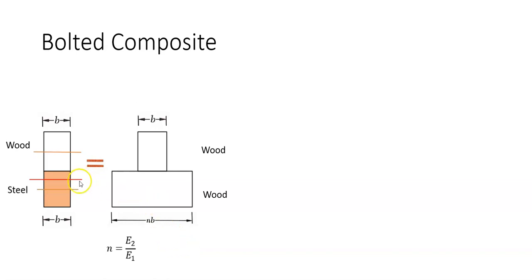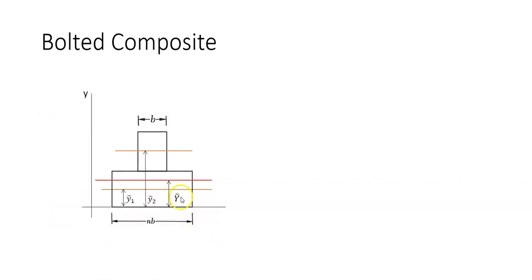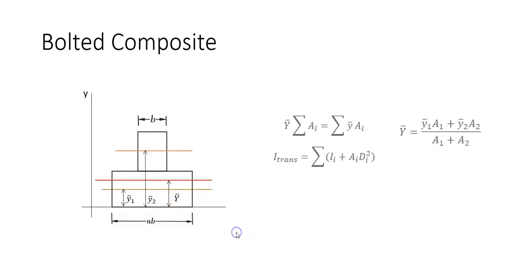Now you are ready to locate the neutral axis of the composite. We have the neutral axis of each section, located at their respective middles. Y-bar is what we are looking for. We plug into the centroid equation, using the vertical distance of the neutral axis of the bottom section and the vertical distance of the top section, to calculate Y-bar — the vertical distance of the neutral axis of the entire composite.